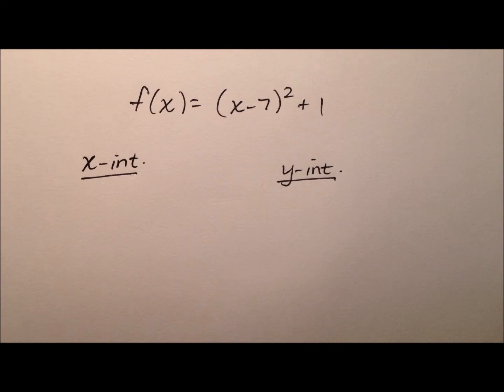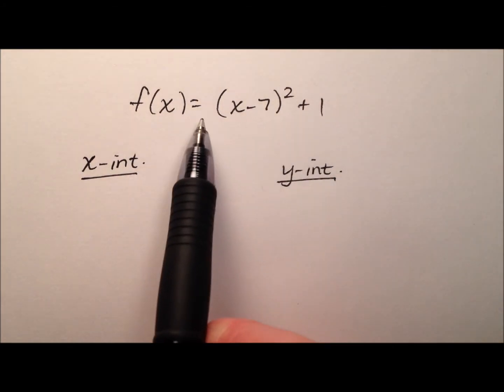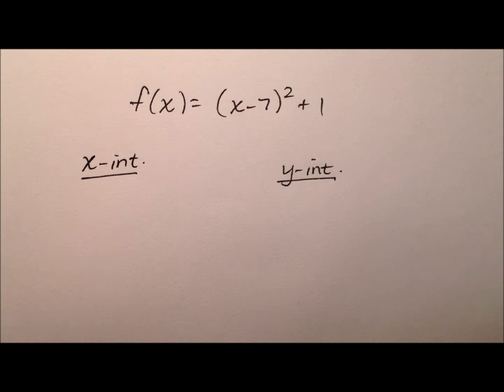In this example, we're going to take a look at this quadratic function. It appears like it's in vertex form, and we're going to go ahead and find its intercepts, so the x-intercept and the y-intercept. We'll do so algebraically first, and then at the end we'll take a look at the graph and see how we did.